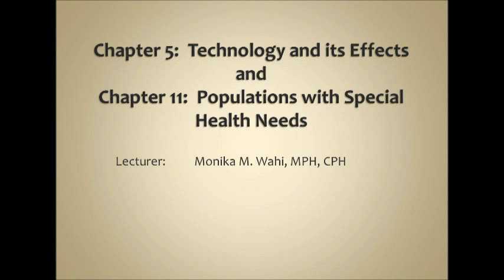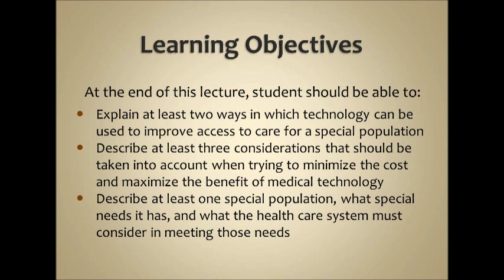Chapter 5: Technology and Its Effects, along with Chapter 11: Populations with Special Health Needs. At the end of this lecture, the student should be able to explain at least two ways technology can improve access to care for a special population, describe at least three considerations for minimizing cost and maximizing benefit of medical technology, and describe at least one special population, its special needs, and what the health care system must consider in meeting those needs.